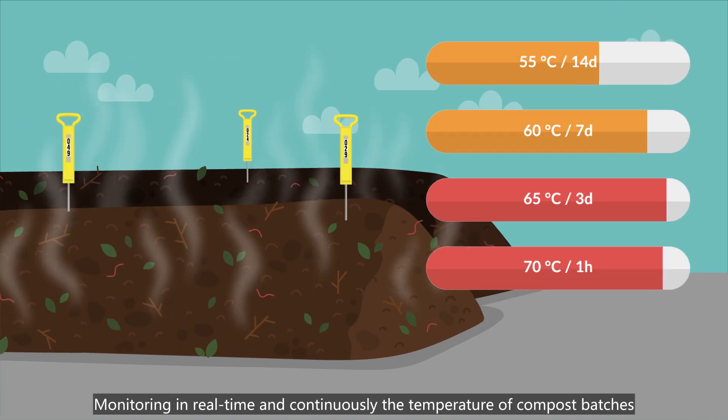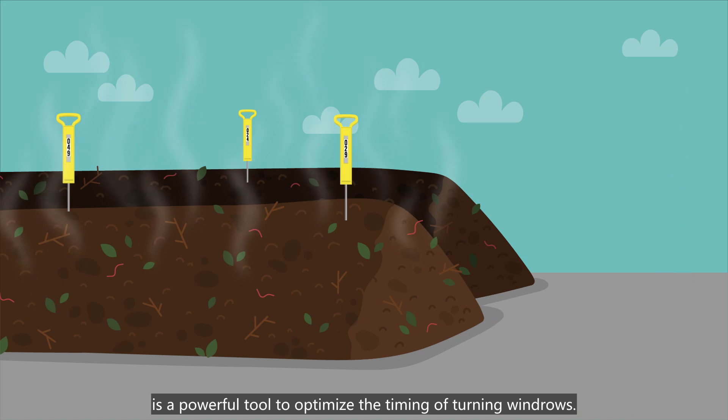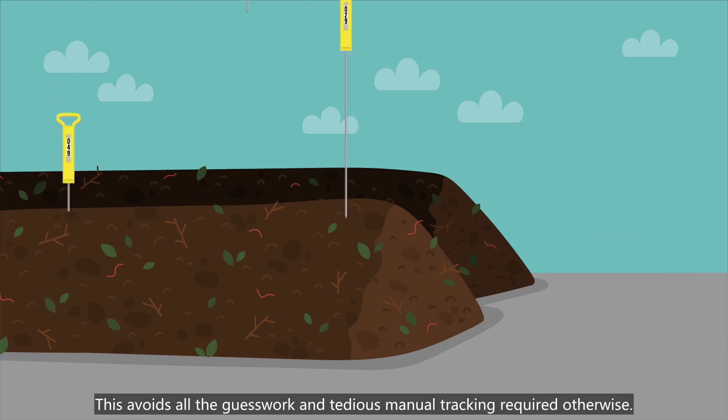Monitoring in real-time and continuously the temperature of compost batches is a powerful tool to optimize the timing of turning windrows. This avoids all the guesswork and tedious manual tracking required otherwise. It allows for faster and better composting processes.